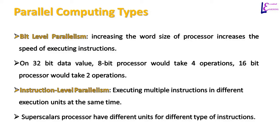For example, on a 32-bit data value, an 8-bit processor would take 4 operations, but a 16-bit processor would take only 2 operations.